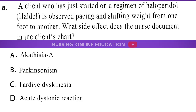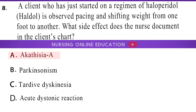Question 8: A client who has just started on a regimen of haloperidol (Haldol) is observed pacing and shifting weight from one foot to another. What side effect does the nurse document in the client's chart? A. Akathesia. B. Parkinsonism. C. Tardive dyskinesia. D. Acute dystonic reaction. The answer is option A: Akathesia.